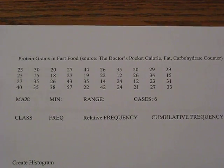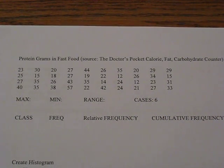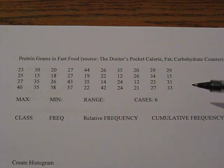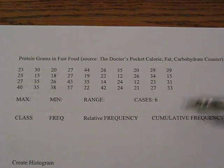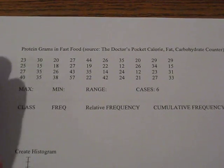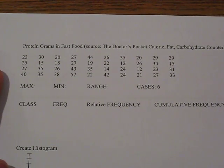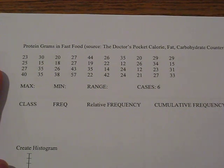So what we're going to do is take a look at this data, which is the protein grams in fast food. There are 40 pieces of data here, and what we're going to do is take a look at how this data basically fits into a percentage. We would use percentages with very large amounts of data, but what we have is a shorter amount - exactly 40 pieces of data.